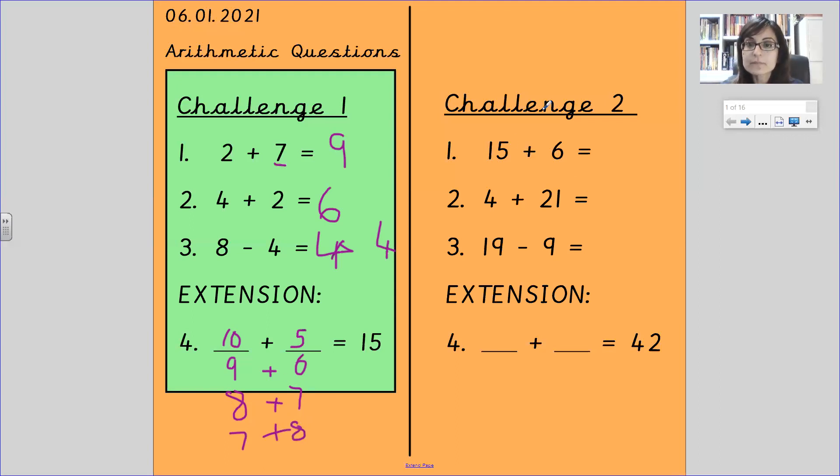Let's go to challenge 2. Same rule applies here. Largest number in your head and count on 6, which gives you 21. Even though number 2, even though you've got the 4 first with 4 plus 21, you still put 21 in your head and count on 4, which gives you 25. 19 take away 9. Now here's a trick top tip for you. If you've got 9 ones here and you're taking away 9 ones, you know with 19 you're going to be left with 10.